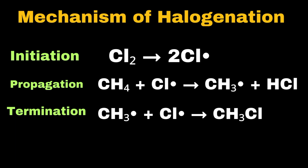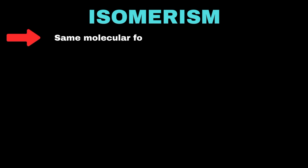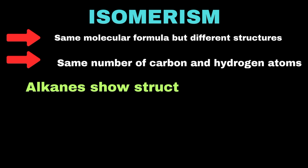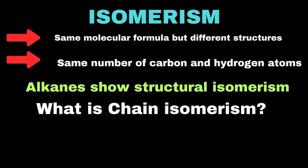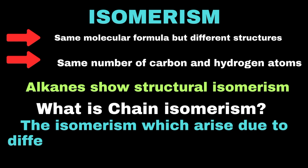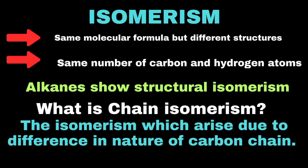Isomerism in alkanes occurs when compounds have the same molecular formula but different structures. They contain the same number of carbon and hydrogen atoms, but their atoms are arranged in different ways. This type of isomerism is called structural isomerism, specifically chain isomerism, and it leads to different physical and chemical properties.